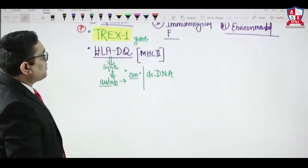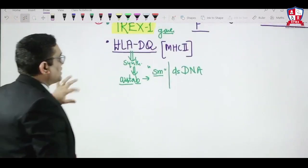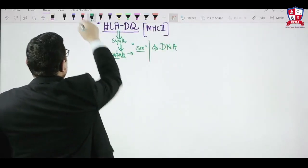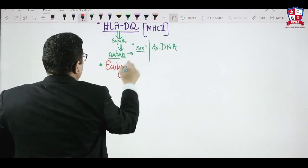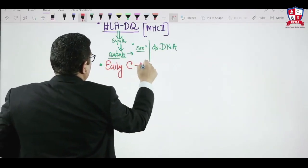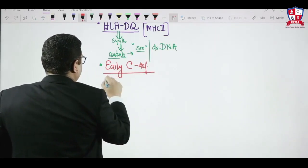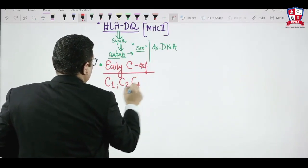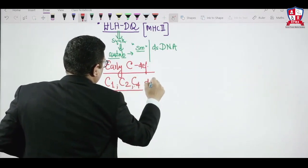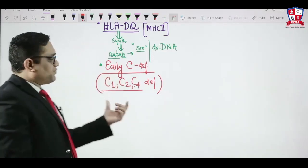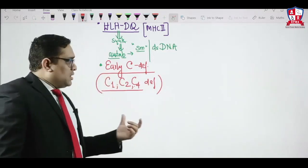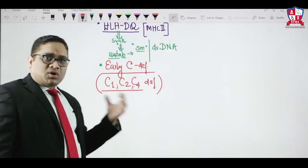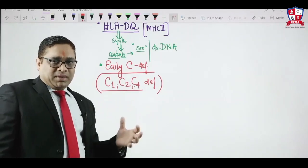The third genetic factor is early complement deficiency — specifically C1, C2, and C4. Complement deficiency of C1, C2, and C4 is also associated with SLE development.